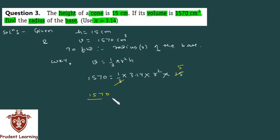So 1570 upon 3.14 into 5 equals r². Taking square root on both sides, r equals square root of 1570 upon 3.14 into 5. If you do this, you will have 15.70.